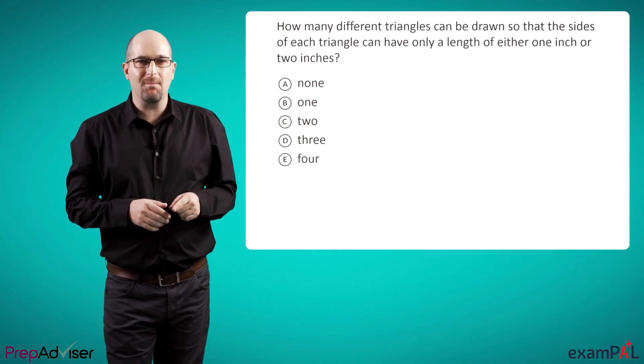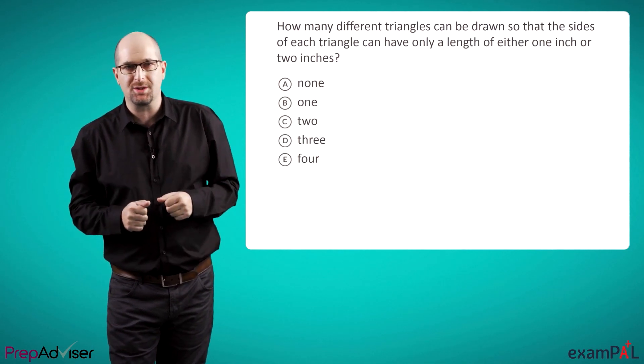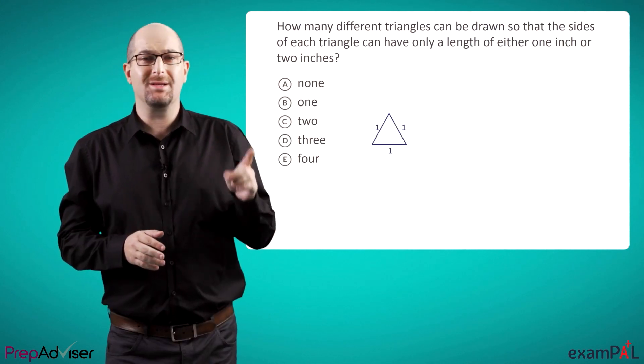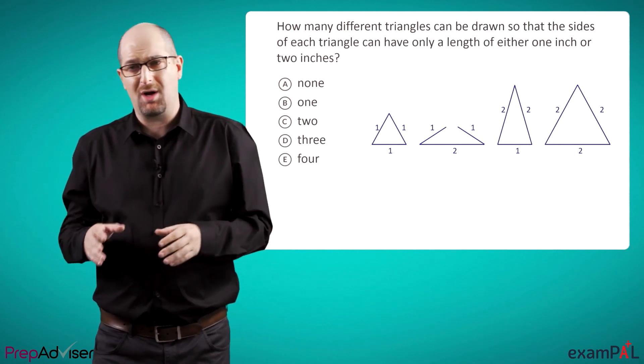If there's no apparent logic, and the question doesn't seem to describe an equation, then we can draw a diagram and use it to try and understand the logic. For example, in this question, it can be hard to imagine different triangles with lengths of one and two inches. And it can be easiest to just draw them. This way we can see pretty easily that there can be three such triangles.